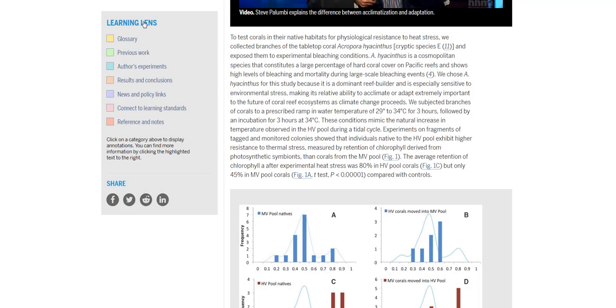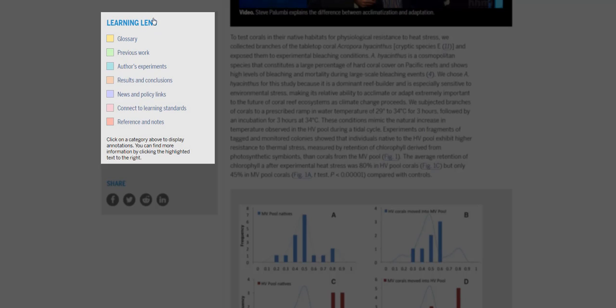With Science in the Classroom, it's all about the Learning Lens. This tool allows you to turn annotations on and off as you wish. The annotations themselves provide a more in-depth description of what's stated in the original article.